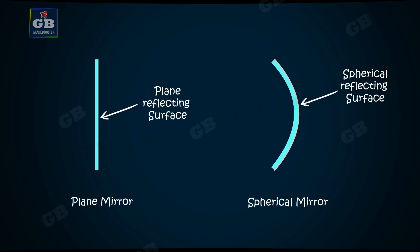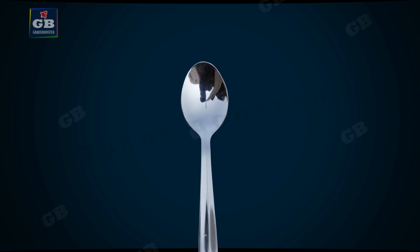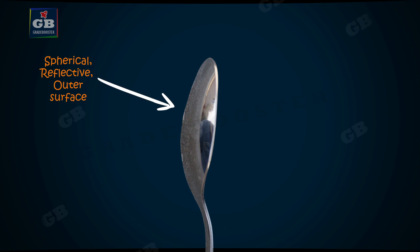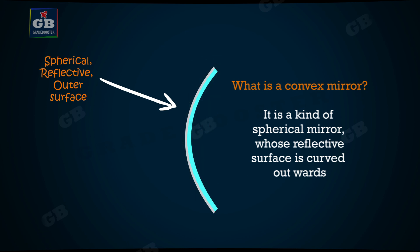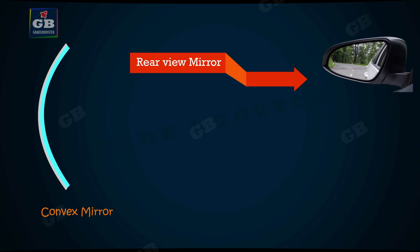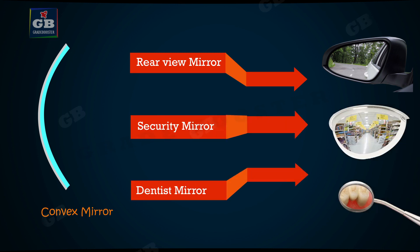Let us understand a few interesting things about spherical mirrors with the help of this spoon. First, let us observe its surface that is bulged out. The outer surface is reflective and it acts like a convex mirror. If the reflective surface of the spherical mirror is curved outwards, it is called a convex mirror. Examples of convex mirrors are vehicle rearview mirrors, security mirrors, and dentist mirrors.